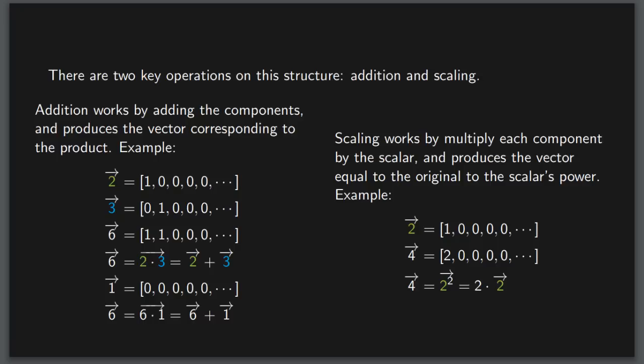In this space, we have two key operations, addition and scaling. To add two of these arrows, we simply add the components, and what results is the product of the original two arrows. For example, if we take the 2 vector and the 3 vector and add each component of the vectors to each other, we get a vector that corresponds to the number 6, the product of 2 and 3.